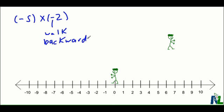So by facing the negative end of the number line and walking backwards, you can see that I'm going to end up going in a positive direction. So I'll take five steps backward of step size two.